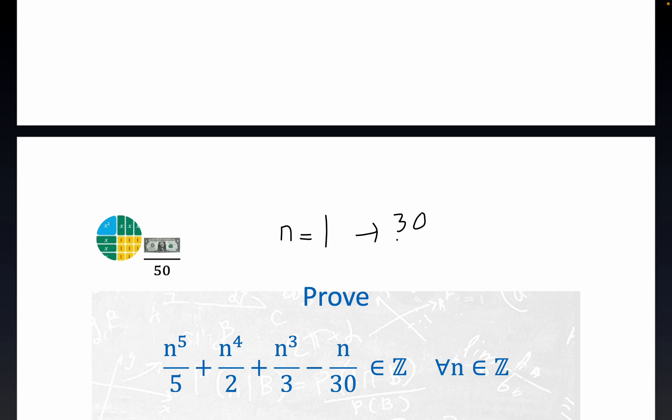But if you put n equals 1, meaning if you put 1 to the fifth here, 1 to the fourth here, 1 cubed here, and 1 here, and take a common denominator, you'll actually get 30 over 30, which is equal to 1, which is a proud member of the set of integers. Z is the set of integers. So we're trying to show for every single n that is an integer, this expression resolves to an integer, meaning it looks like a bunch of fractions, but it turns out it resolves to an integer.